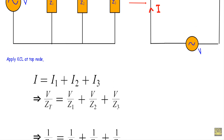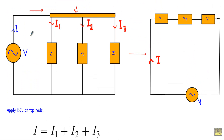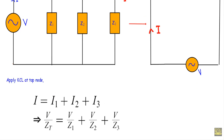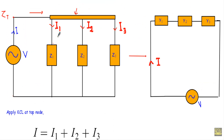We are applying a voltage V across the terminals, and the total impedance of the circuit is ZT. Therefore, total current I equals V divided by ZT. Since this is a parallel circuit, the voltage across Z1, Z2, and Z3 is the same V, so I1 equals V divided by Z1, I2 equals V divided by Z2, and I3 equals V divided by Z3.